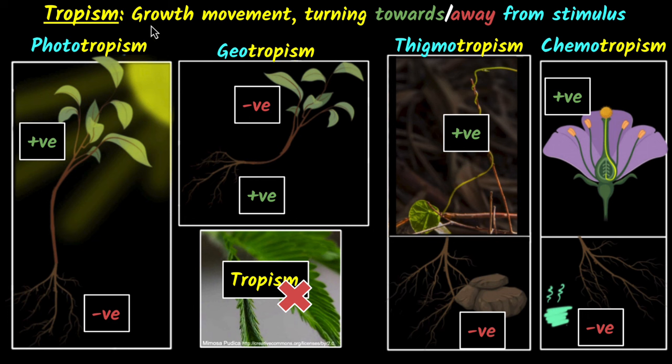Because look, tropism needs to be a growth movement. This is not a growth movement. It's just closing. It's not growth. And notice tropism needs to be either towards or away from the stimulus. It's neither towards the touch nor away from the touch. So because of these examples, this is not a tropism movement.